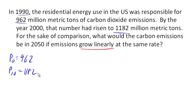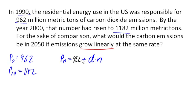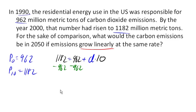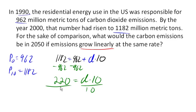There are two ways we could do that. One is to figure out the total difference and divide by 10, like we've done before. But I'm going to show you a different approach — the same approach we just used with exponential growth. We know P₀ is 962, and if N is 10, then P sub 10 is 1182. This gives an equation I can solve for D: subtract 962 from both sides to get 220 equals D times 10, then divide both sides by 10, and D is 22.